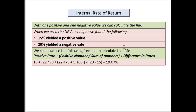We use the following formula to calculate the internal rate of return: take the positive rate, then add in brackets the positive number over the sum of the two numbers. When using this sum, we state both values as positive even though one was negative in our calculation — the formula is designed that way. Close the bracket and multiply by the difference in rates.